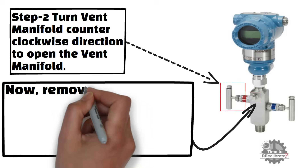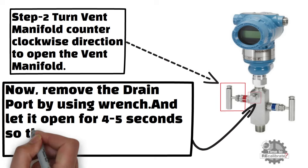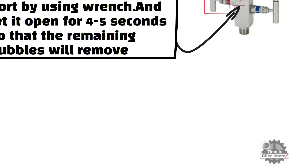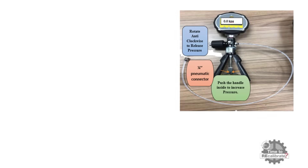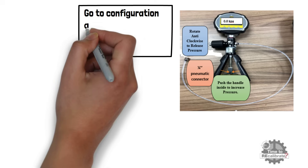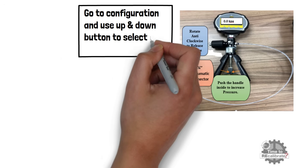Step 3: Now remove the drain port by using a wrench, and let it open for 4-5 seconds so that remaining bubbles will be removed. In order to set the unit in the pressure calibrator, go to the configuration menu and use the up and down buttons to select a unit, and press OK to confirm the selection.